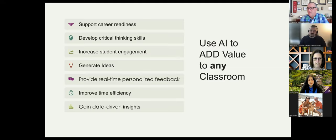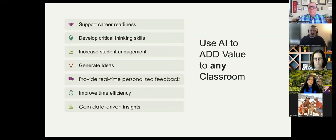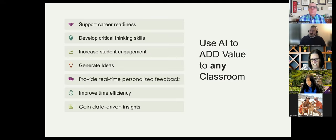AI can help support career readiness and develop critical thinking skills. You might wonder how that's possible — we worry that using a GPT could get rid of critical thinking. But if we use it to compare different outputs from different GPTs, and compare those with their own research to see how valid the output is, that builds critical thinking. It can also increase student engagement, generate different ideas to get them started on papers, provide real-time personalized feedback — which is essential in online learning — improve time efficiency, and gain data-driven insights into which students are struggling with certain concepts.